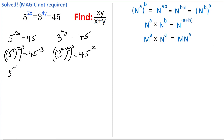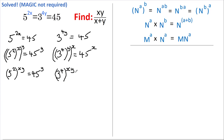This gives us 5 squared, all to the power of x multiplied by y, equals 45 to the y. And here I can write it as 3 to the power of 4, also to the power of x multiplied by y, equals 45 to the x.